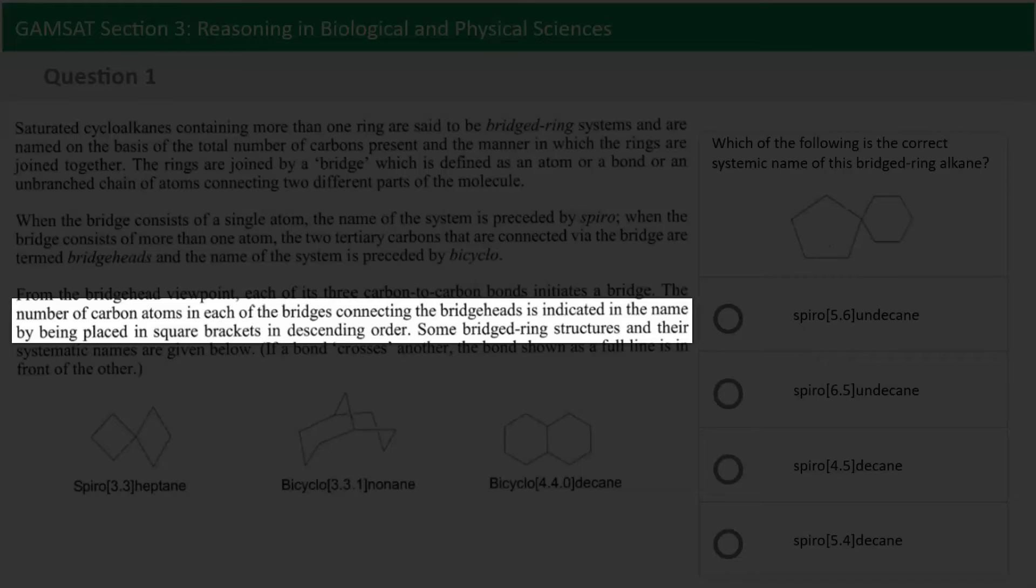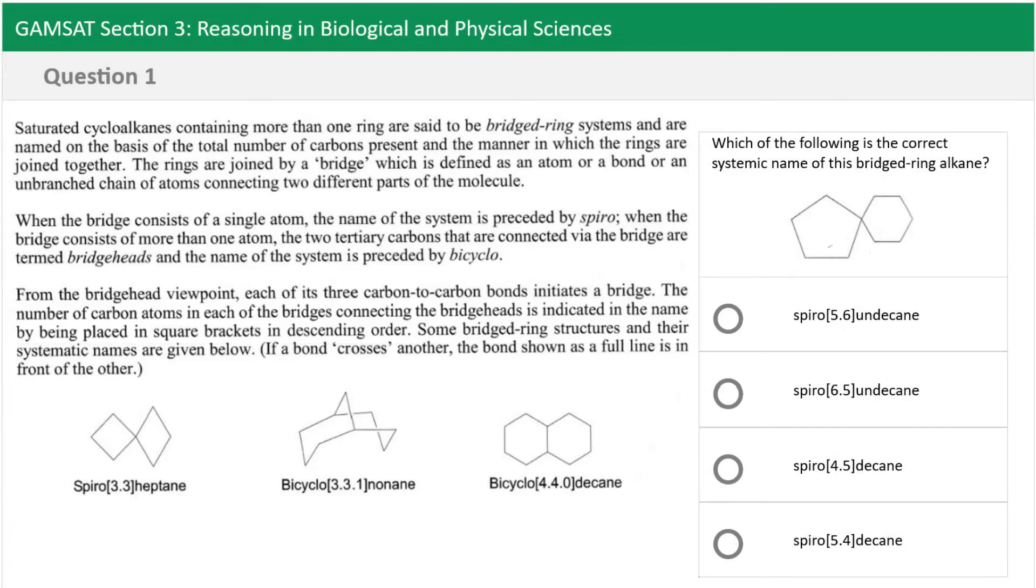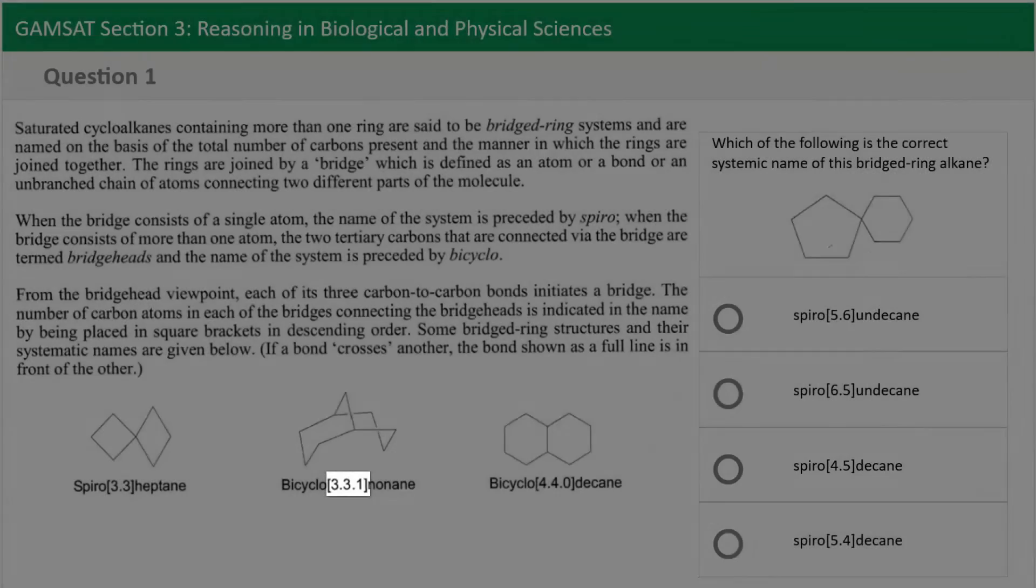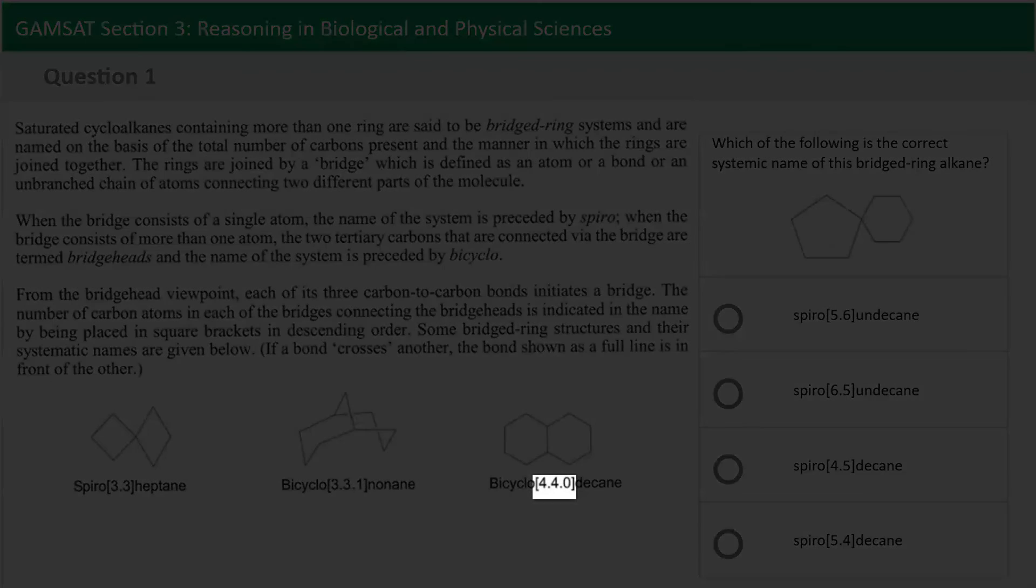So that's referencing the numbering system in square brackets and if we keep on going in descending order, which means that we have to place the numbers from largest to smallest, and we can see from the examples that indeed that's what happens. When we look at for example Bicyclo 3 3 1 nonane and Bicyclo 4 4 0 decane we start off with the larger numbers first and we end up with the small numbers.